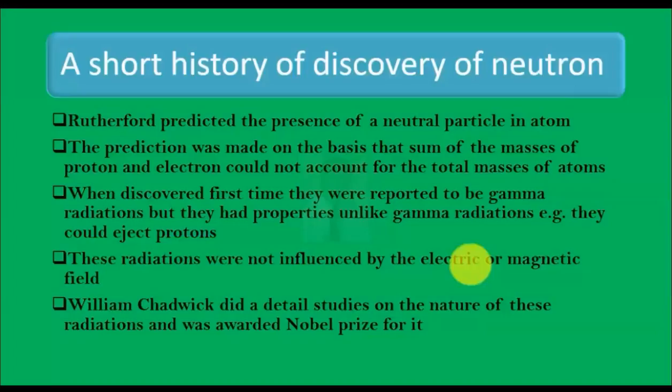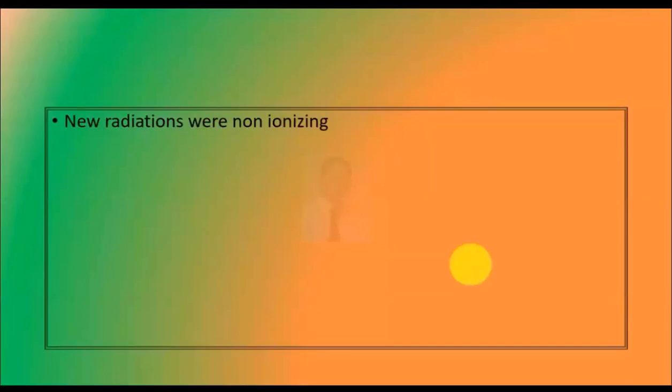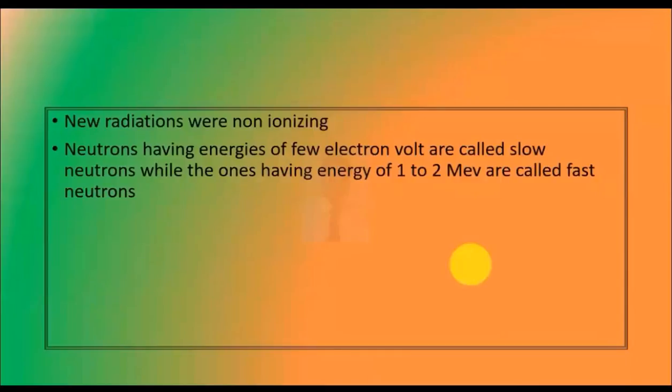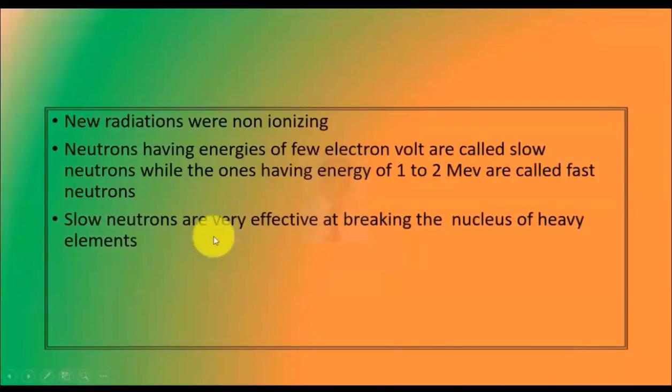These new radiations were non-ionizing. Neutrons having energies of few electron volts are called slow neutrons, while the ones having energy of 1 to 2 mega electron volts are called fast neutrons. These newly discovered radiations were electrically neutral and called neutrons. Slow neutrons are very effective at breaking the nucleus of heavy elements.